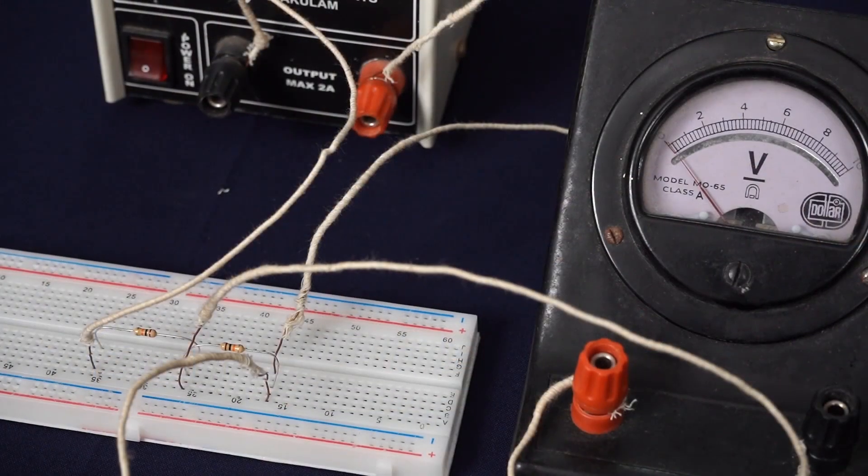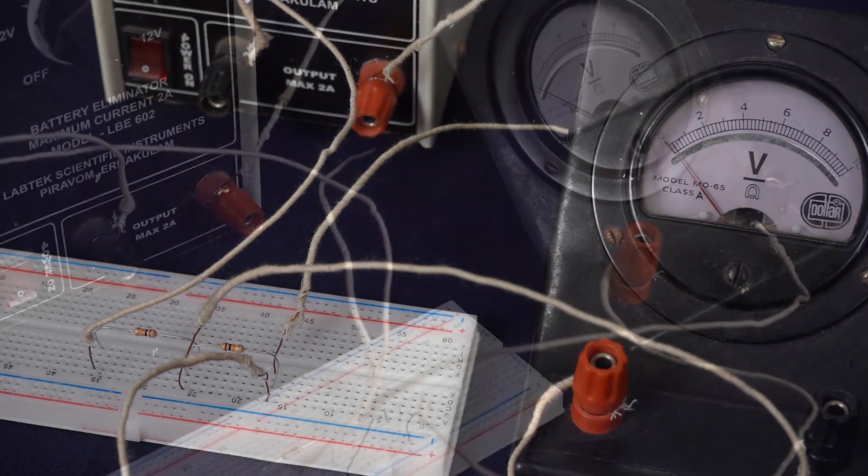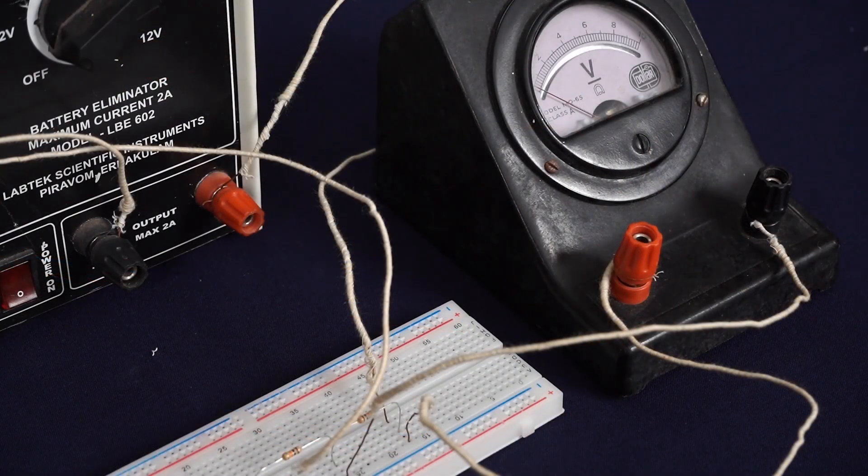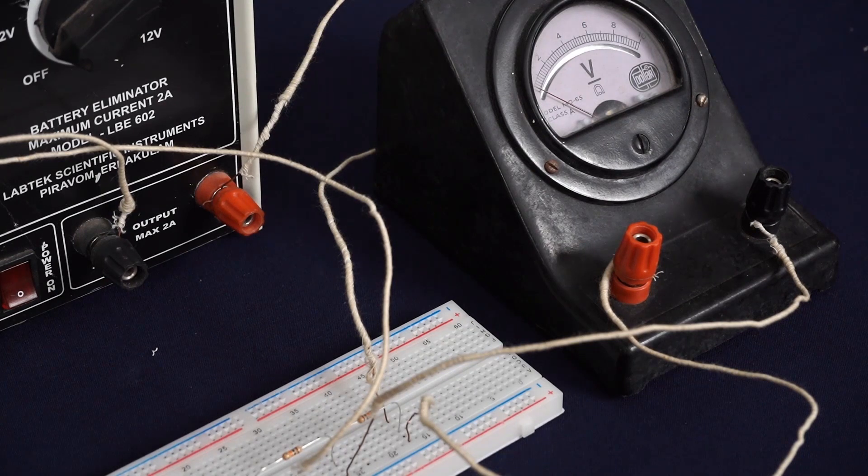Make sure the positive terminal of the voltmeter is attached to the positive terminal of the cell and the negative terminal of the voltmeter is attached to the negative terminal of the cell.